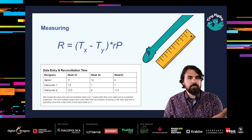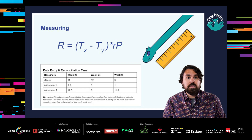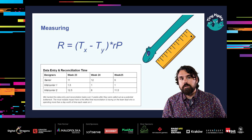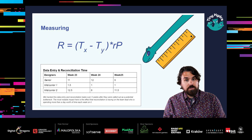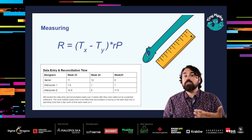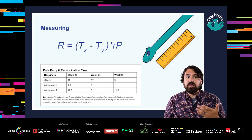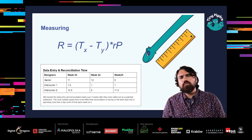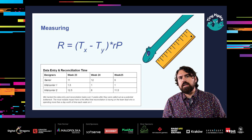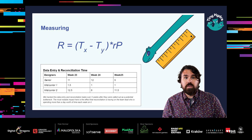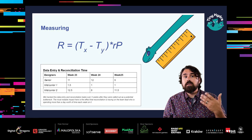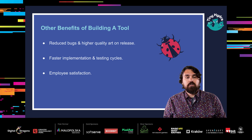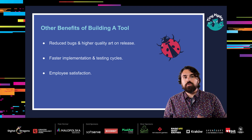Since time is the best measure, it follows that it's more relevant to make tools for games with longer production cycles or tools with recurring use value. Companies making games with long production cycles using the same engine, and software-as-a-service companies, are probably the ones that benefit most from custom tools development. This is why we've seen the AAA industry really embrace the technical art discipline over the last 10 years. Other benefits — which can be hard to quantify — include reduced bugs, higher quality art on release, faster implementation and testing cycles, and higher employee satisfaction.